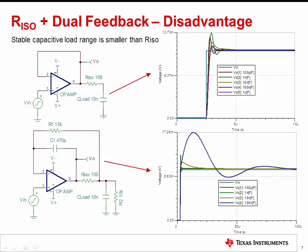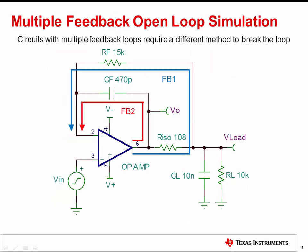Also, the R-ISO plus dual feedback circuit generally results in slower settling times than the R-ISO circuit. Part three showed how to perform open loop analysis on many common op-amp circuits; however, those circuits all had one feedback loop. If we want to perform a simulated open loop analysis on multiple feedback circuits like the R-ISO plus dual feedback compensation, a different method is required, which we'll now discuss.